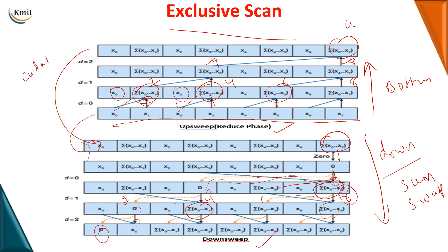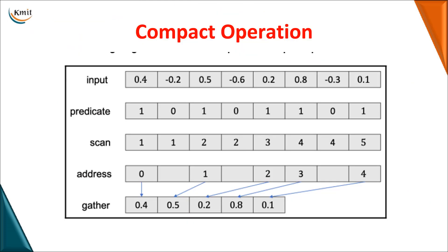When writing parallel programming techniques for these scan operations, you use basic memory transfers like memcpy for transferring data from host to device, and cudaMalloc functions to allocate memory for device data. Once these basic operations are included in your main method, you write a kernel method that performs the inclusive and exclusive scan operations.